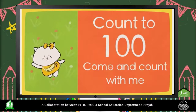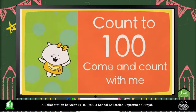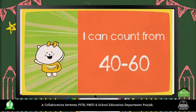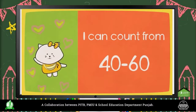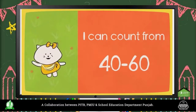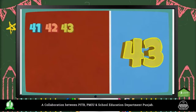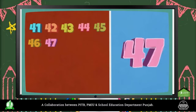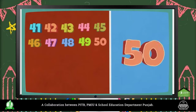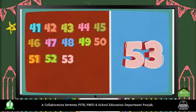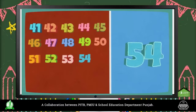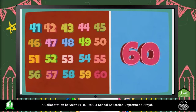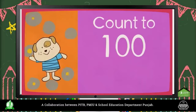Count to 100, come and count with me. I can count from 40 to 60. 41, 42, 43, 44, 45, 46, 47, 48, 49, 50, 51, 52, 53, 54, 55, 56, 57, 58, 59, 60.